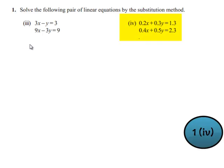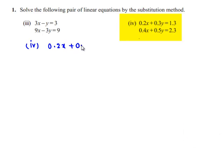Let us see the fourth problem now, which is 0.2x + 0.3y = 1.3 and 0.4x + 0.5y = 2.3. The given equations are in terms of decimals, so let us first convert them in terms of whole numbers.